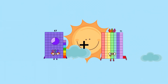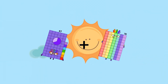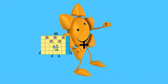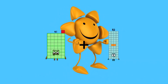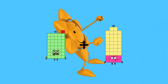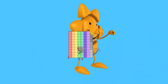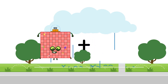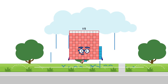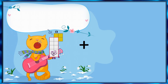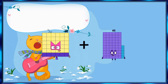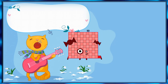67 plus 70 equals one hundred thirty-seven. 41 plus 38 equals 79. 102 plus 13 equals 115. 36 plus 65 equals 101.